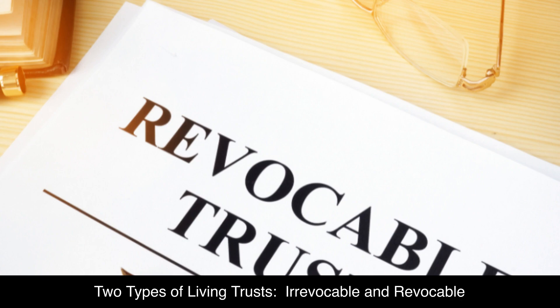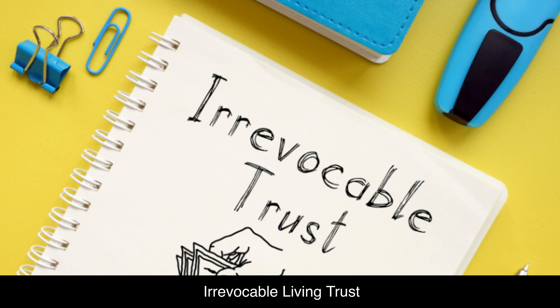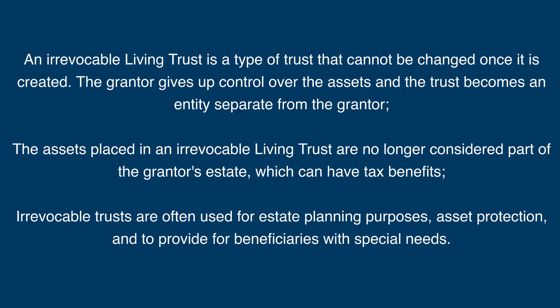There are two types of living trusts: irrevocable and revocable. An irrevocable living trust is a type of trust that cannot be changed once it is created. The grantor gives up control over the assets, and the trust becomes an entity separate from the grantor. The assets placed in an irrevocable living trust are no longer considered part of the grantor's estate, which can have tax benefits. Irrevocable trusts are often used for estate planning purposes, asset protection, and to provide for beneficiaries with special needs.